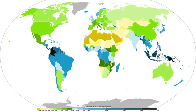Guinness World Records lists the world's largest snowflakes as those of January 1887 at Fort Keogh, Montana, allegedly one measured 38 centimeters (15 inches) wide. The exact details of the sticking mechanism remain a subject of research. Although the ice is clear, scattering of light by the crystal facets and hollows and imperfections mean that the crystals often appear white in color due to diffuse reflection of the whole spectrum of light by the small ice particles.